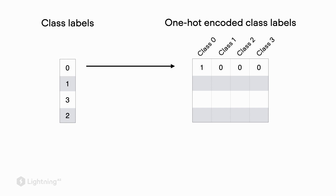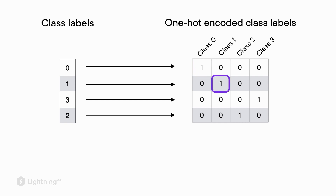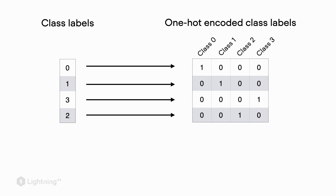Now we convert this into the one hot encoded class label form. With one hot encoding, we change the values from zero, one, two, three into a form where we only have zeros and ones. The one hot encoded form means that for each training example there is one 'hot' value of one and all other values are zero. So for class label zero the index zero is one; for class label one the one hot value is at the second index position; for class label three the one is at the fourth position; and for class label two the hot position is at position three.